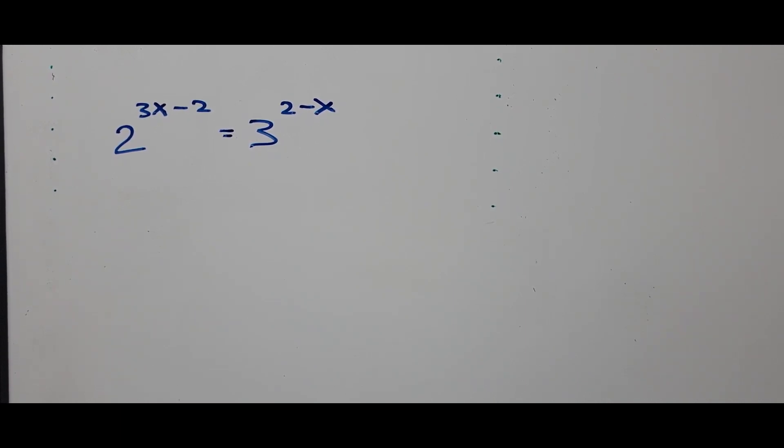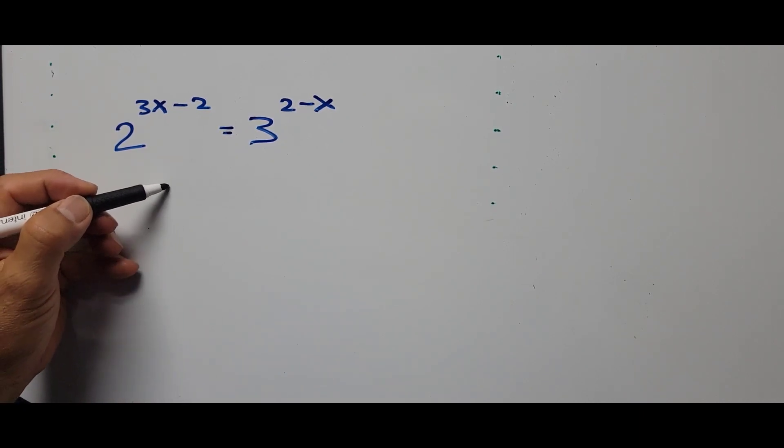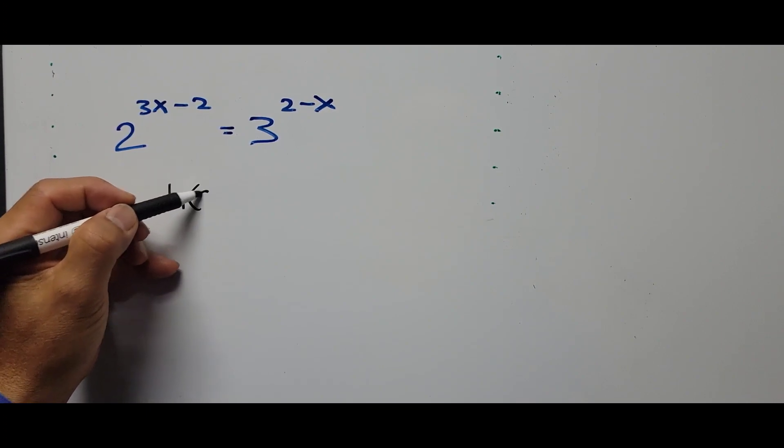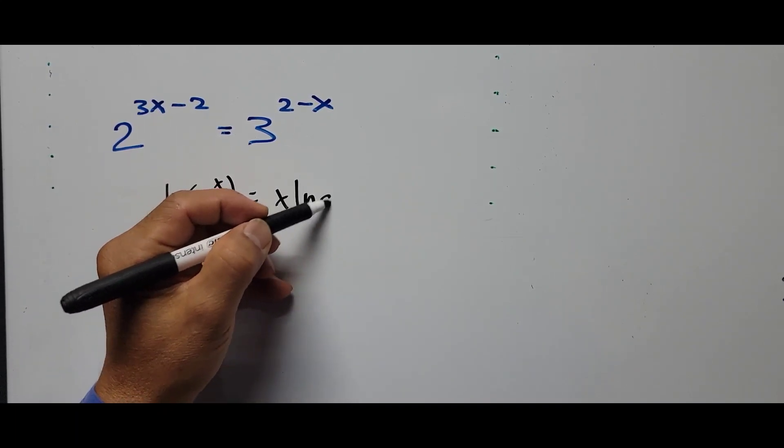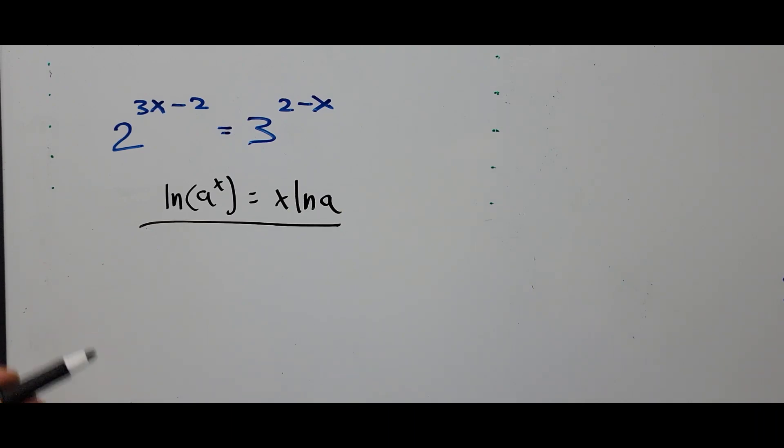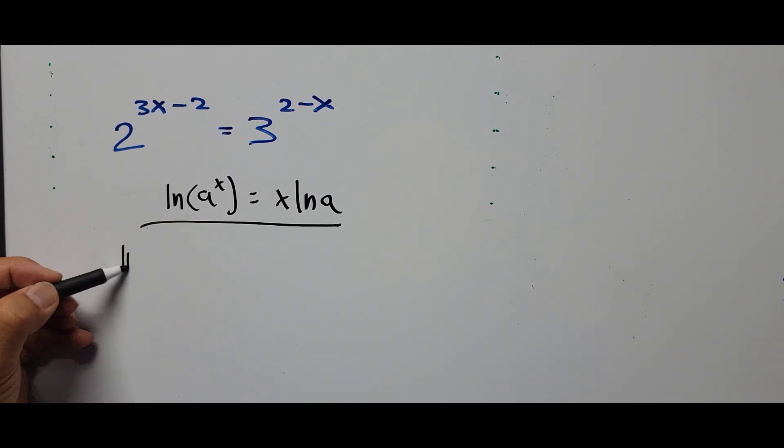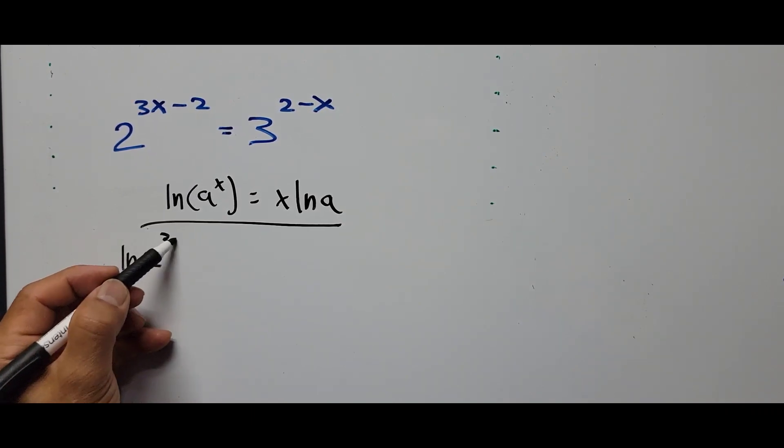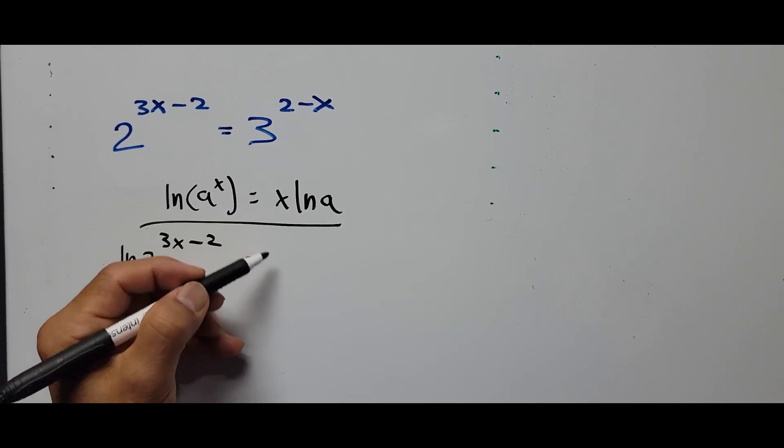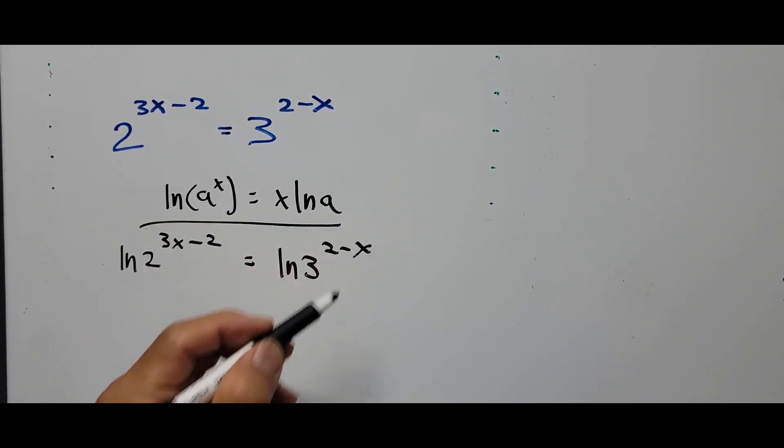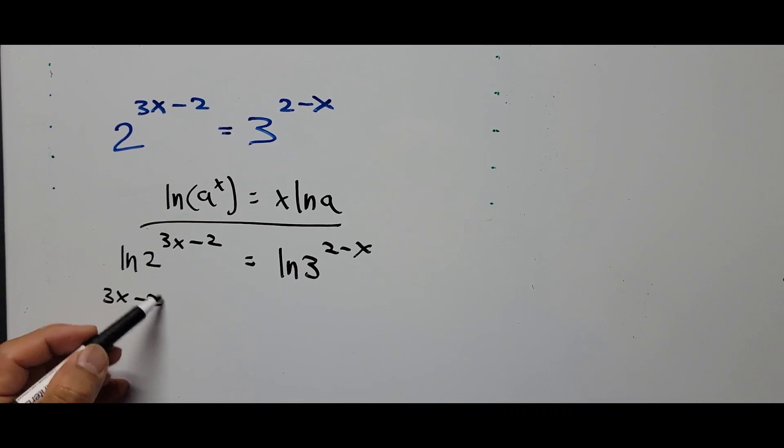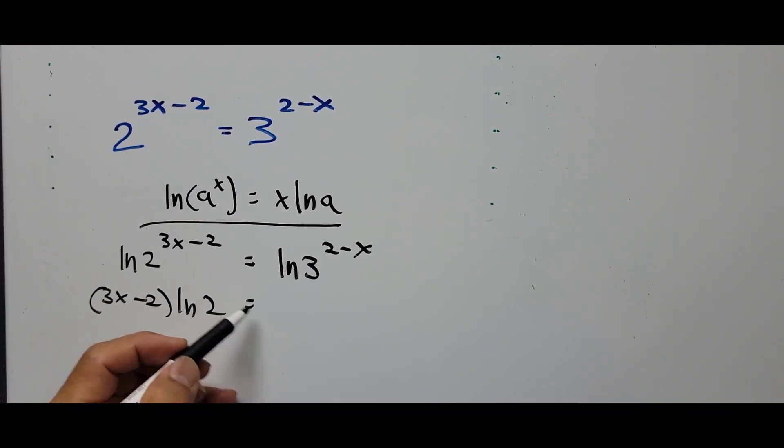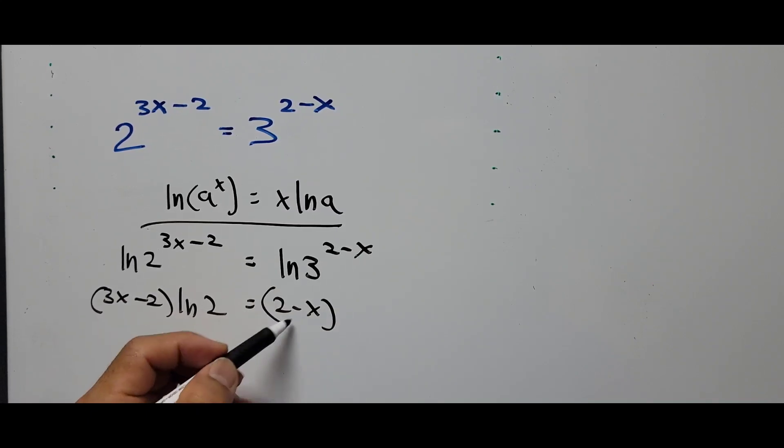Here we'll be using the natural logarithm. The logarithm of power, ln of a to the x power, is equal to x ln of a. So ln of 2 raised to 3x minus 2 equals ln of 3 raised to 2 minus x. That is 3x minus 2 ln of 2 equals 2 minus x ln of 3.